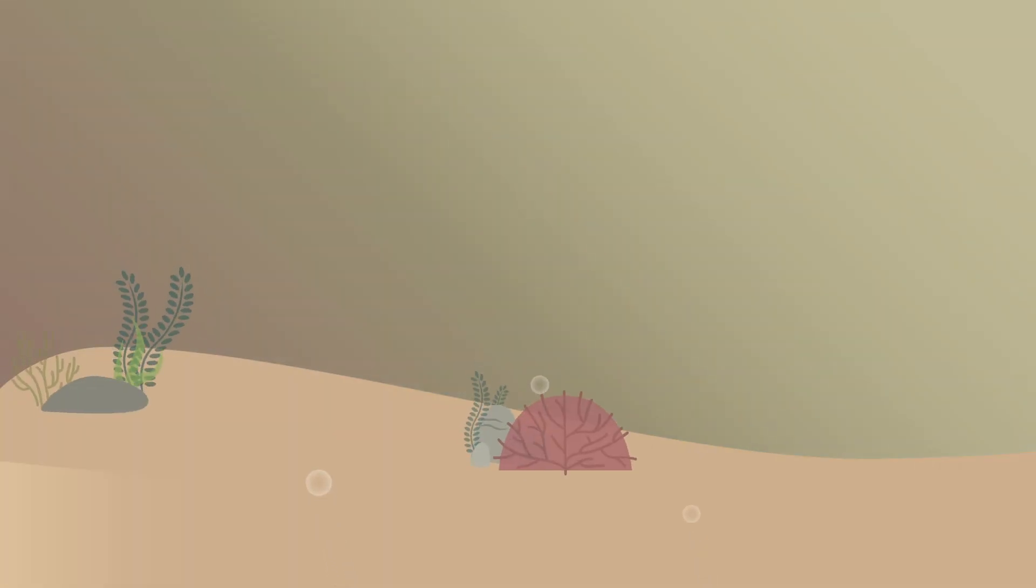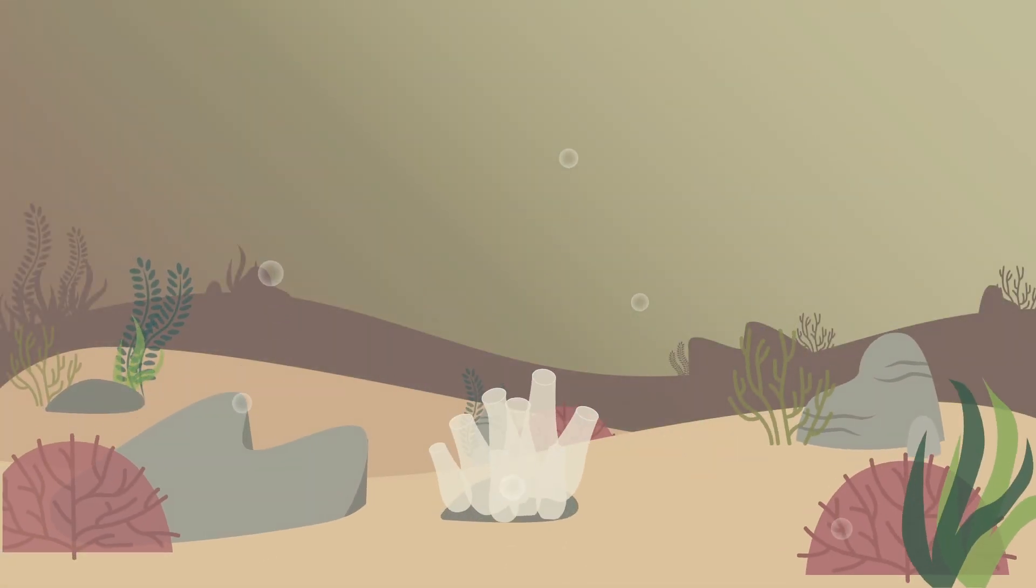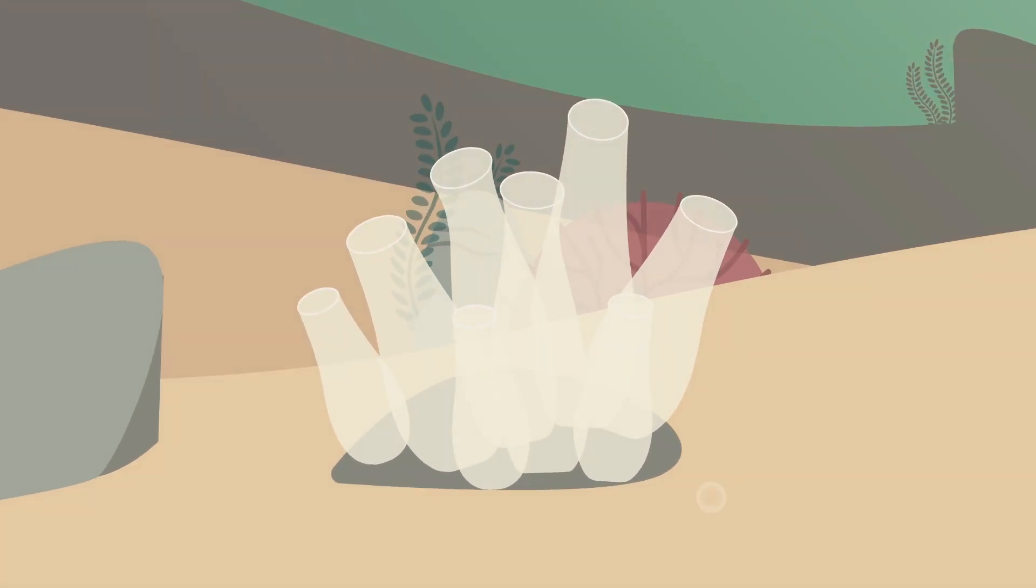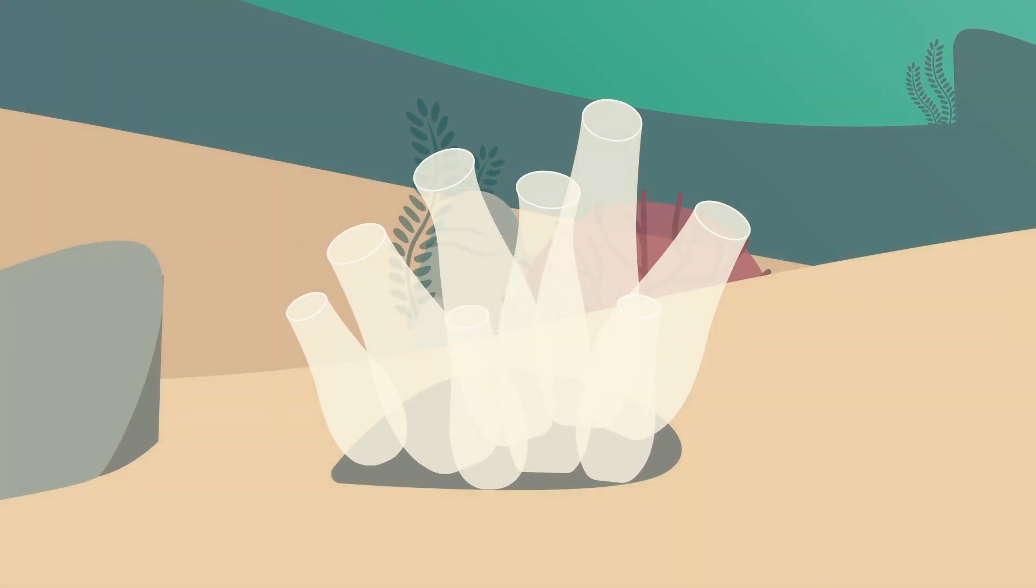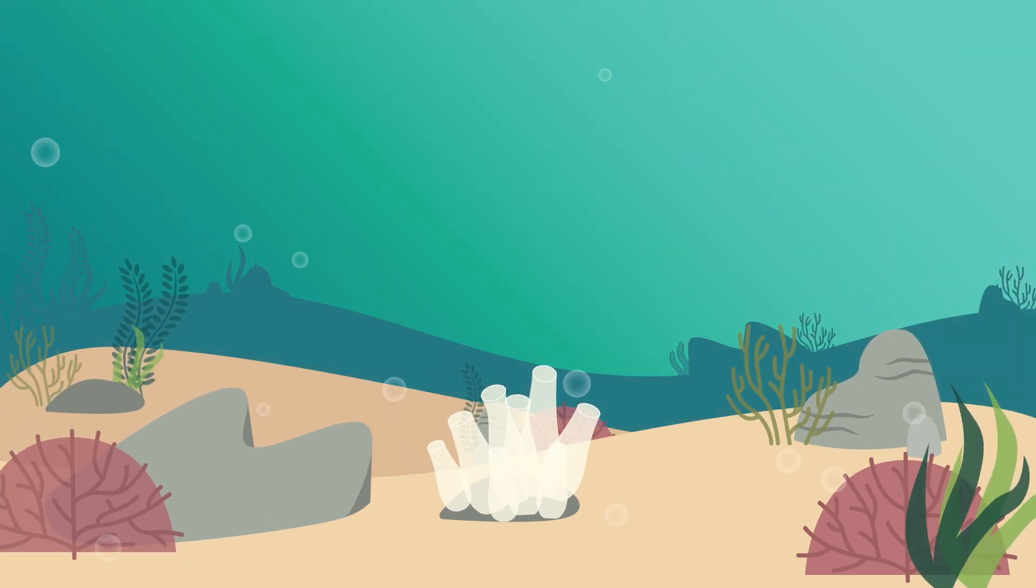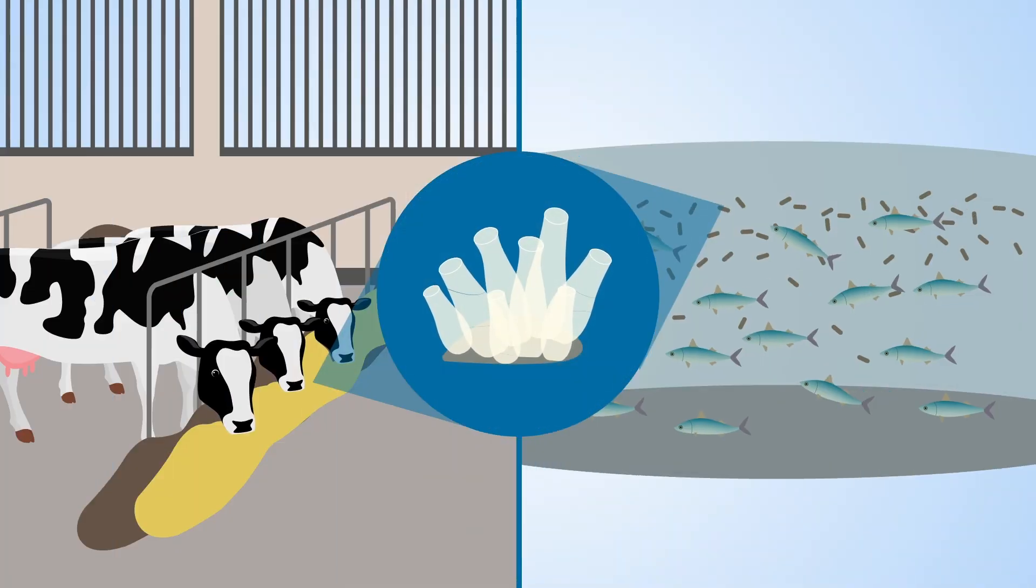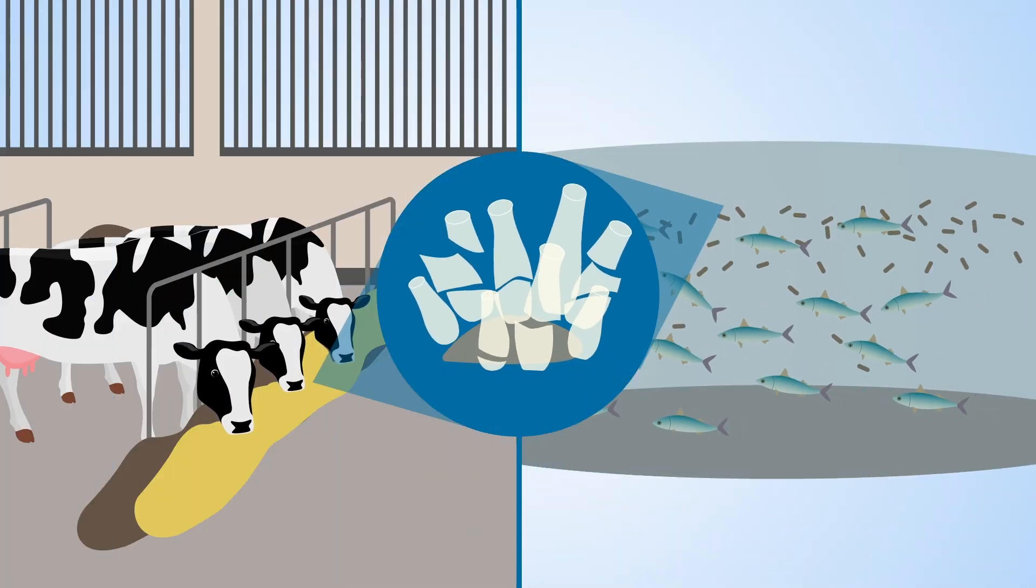AquaBio ProFit will also look into optimizing farming and processing of tunicates. These sea squirts have an amazing ability to act as a biofilter and improve water quality, and they can be used as a novel source of fiber and proteins in animal feed.